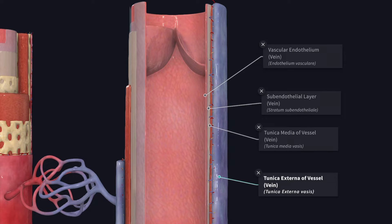A clear distinction between the tunica intima, tunica media and the tunica adventitia cannot be made out in small veins, as all these layers contain predominantly fibrous tissue.